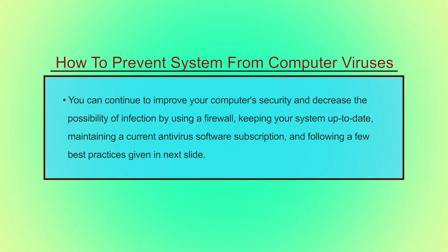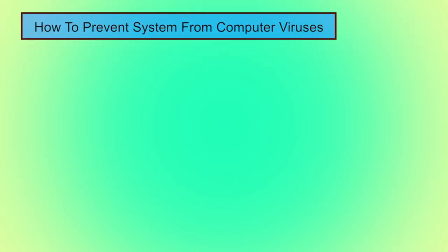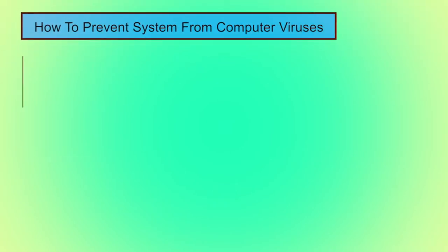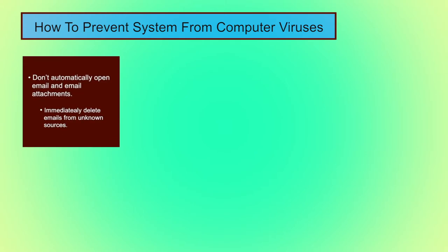You can continue to improve your computer security and decrease the possibility of infection by using a firewall, keeping your system up to date, maintaining a current antivirus software subscription, and following some best practices. How to prevent your system from computer viruses: first, do not open emails and email attachments received from unknown or untrusted sources. Ensure that you examine and scan email attachments before they run, as they might contain viruses.